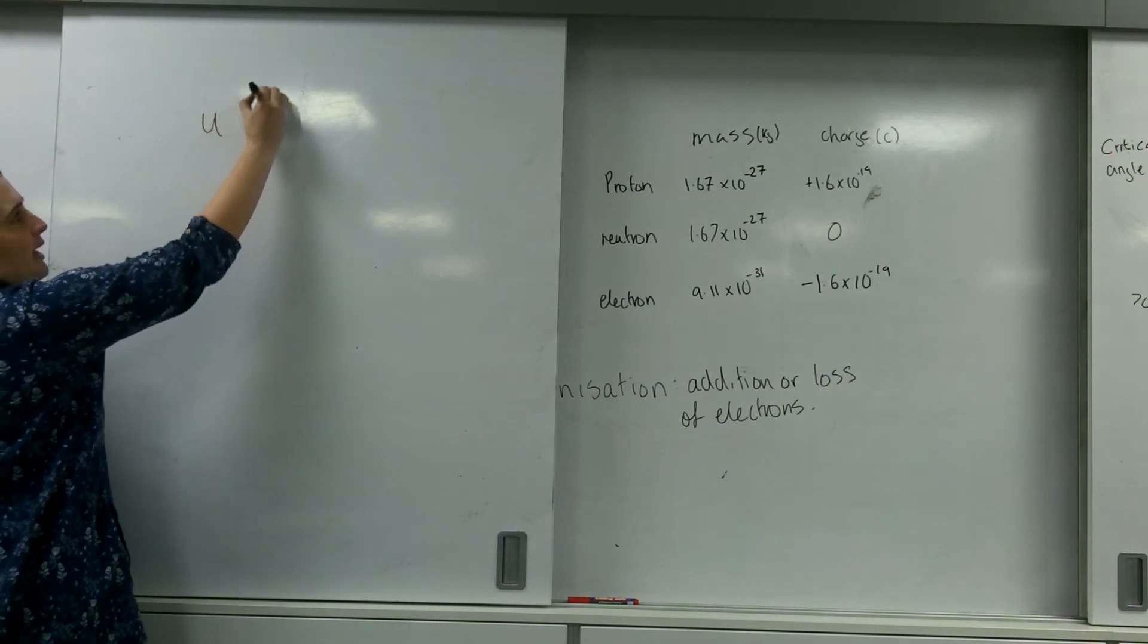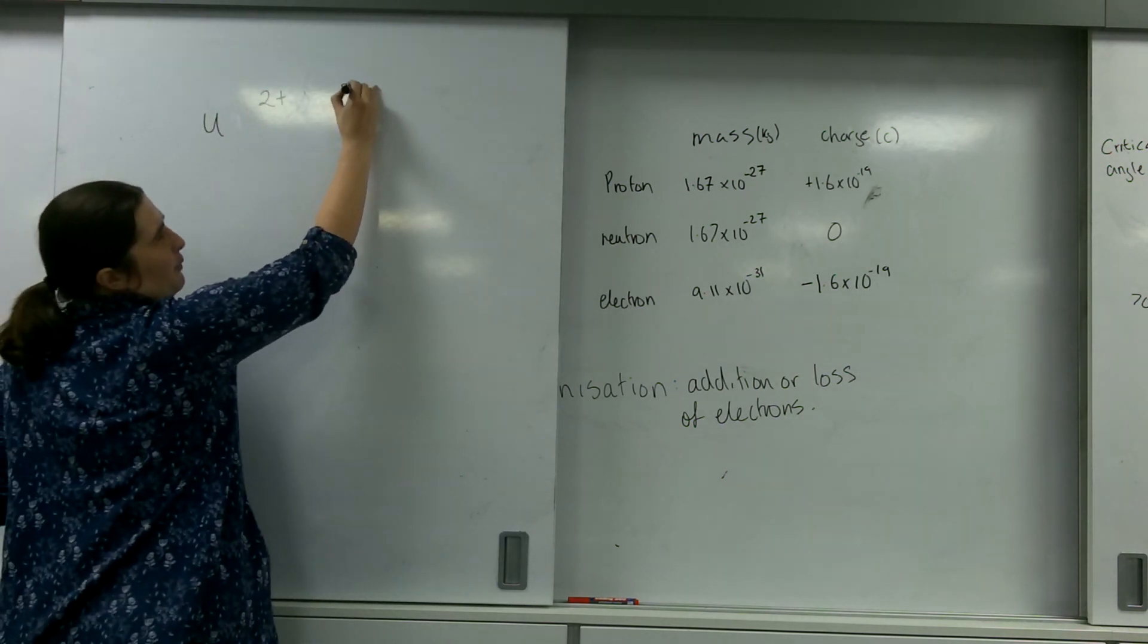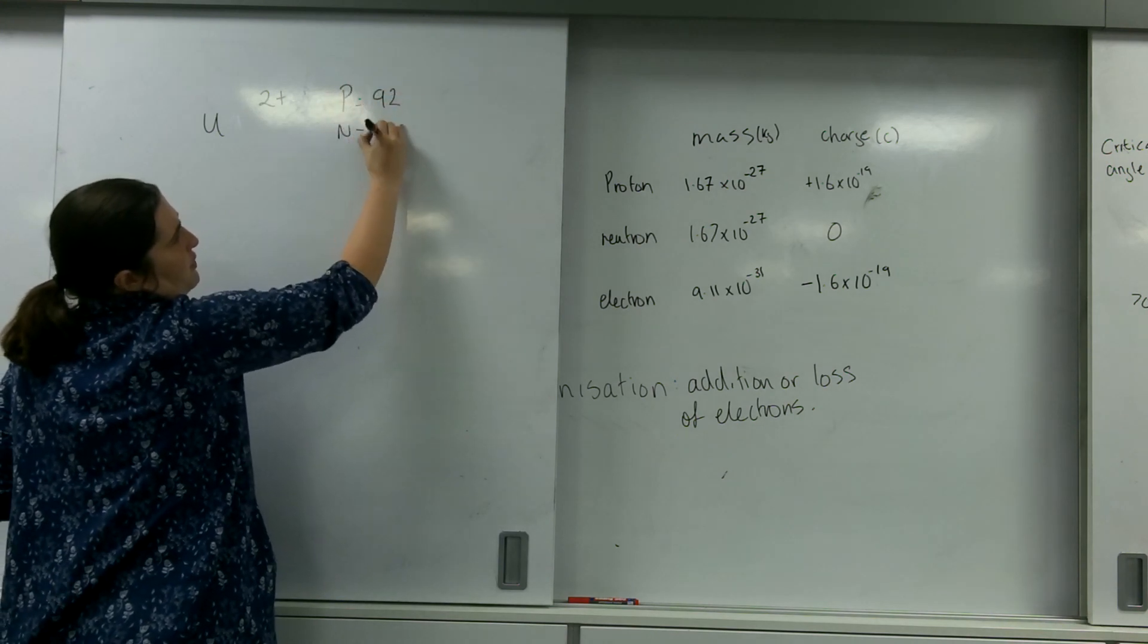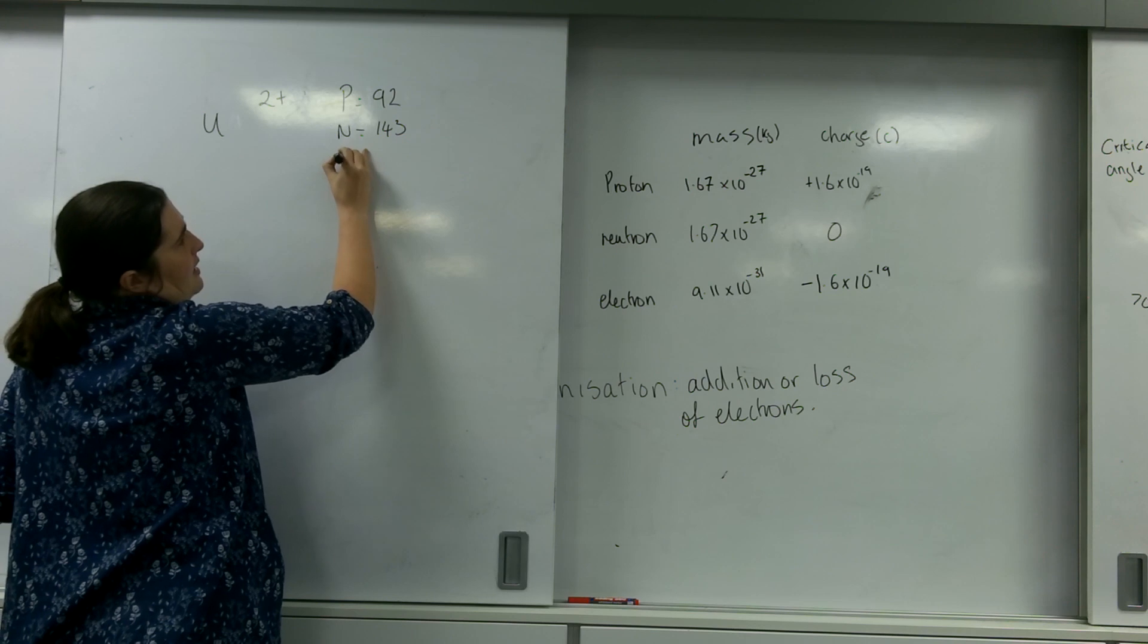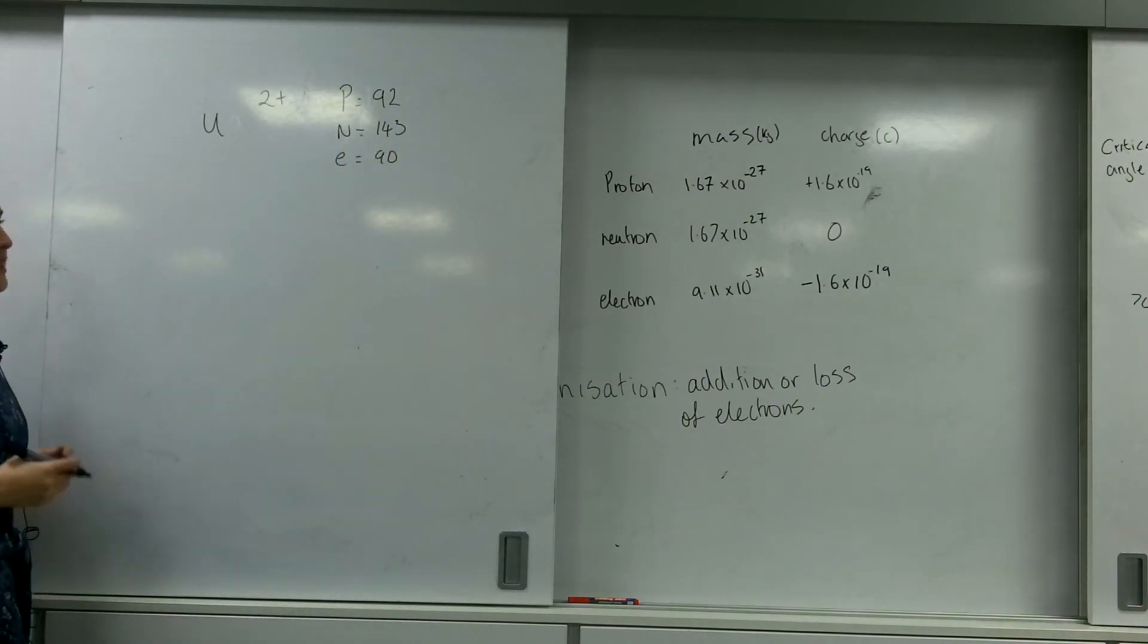So, this is my uranium, and I've got 2+ here. A minute ago, we had protons was 92, neutrons was 143, and I had 90 electrons.